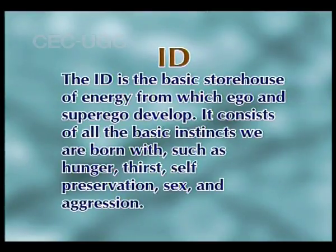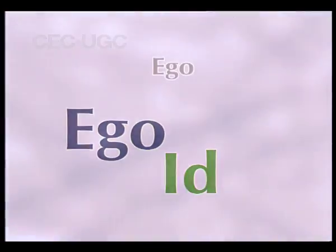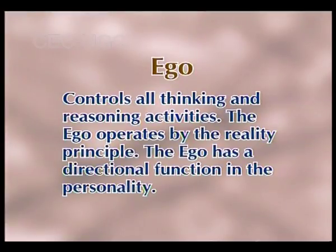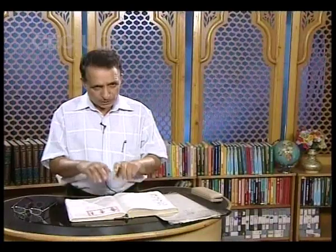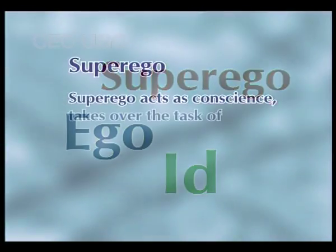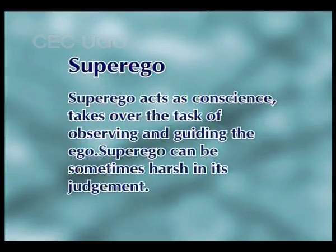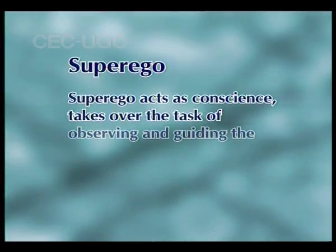If a person is highly inclined toward getting satisfactions, pleasures, and enjoyments, you would say it is id in operation. The ego is the balancer — if you find a person consistently working in a balanced manner, you would say that ego is in charge. A person who is highly condemning evil things or instructing people — you will say that superego is in charge. So you have ego-directed, id-directed, or superego-directed personality, which is a typology presented by Dr. Freud.